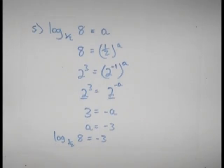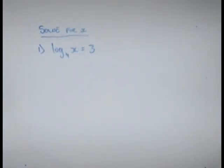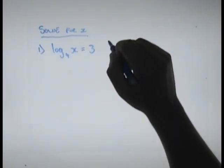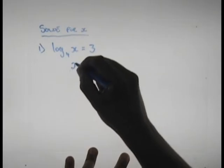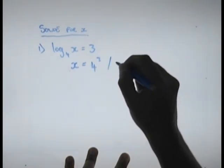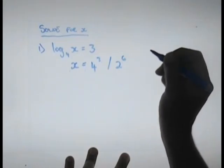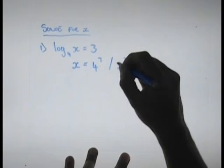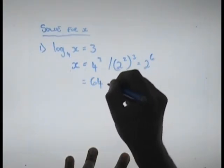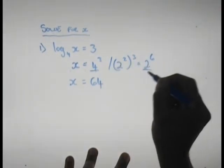If you struggled with any of the solve-for-x questions, press pause and go through those before continuing. Now, onto the solving for x section. The first one was: log base 4 of x equals 3. This means x equals 4 to the power 3. You can leave it in that form, or convert it to 2 to the power 6, which equals 64. So x equals 64.